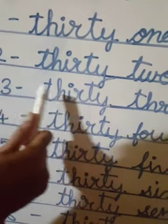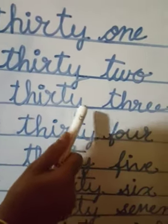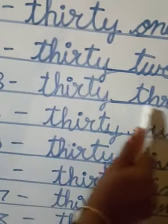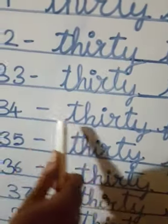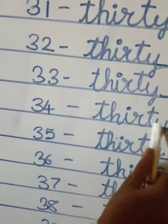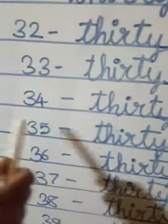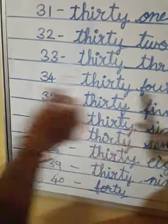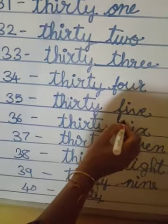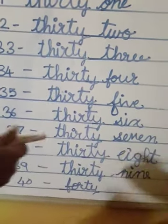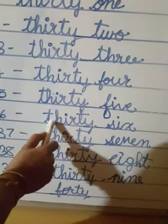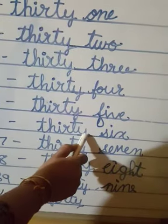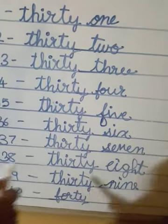Next is 33. T-H-I-R-T-Y T-H-R-E-E. 33. Next one, 34. T-H-I-R-T-Y F-O-U-R. 34. 35. T-H-I-R-T-Y F-I-V-E. 35. 36. T-H-I-R-T-Y S-I-X. 36.